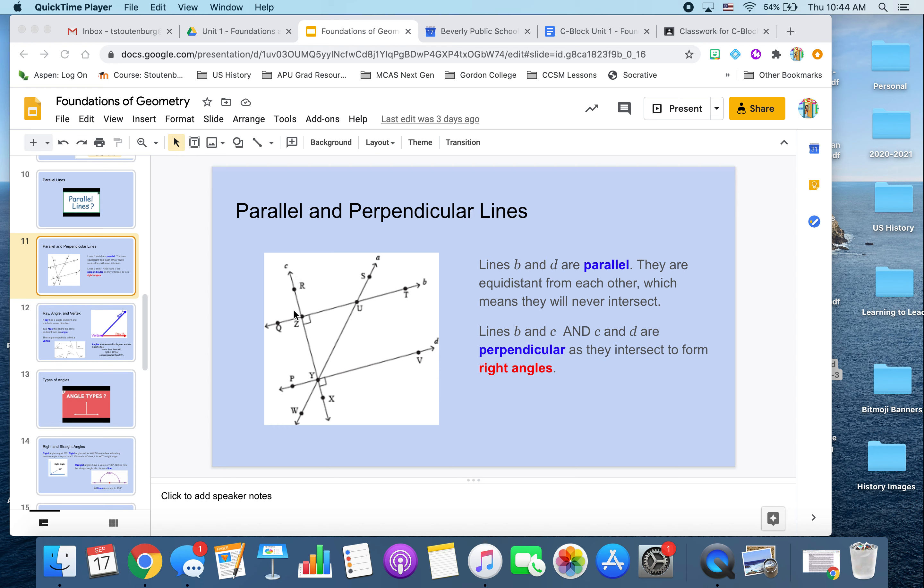Same thing for line C and line D. They both intersect to form that right angle. So line C and line D are also considered perpendicular lines.